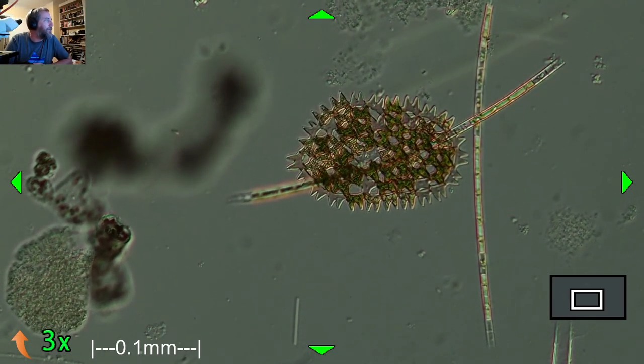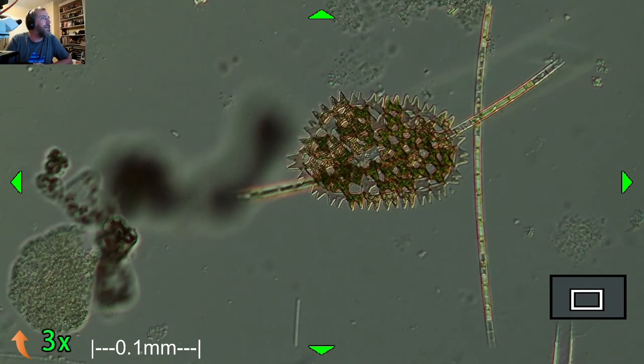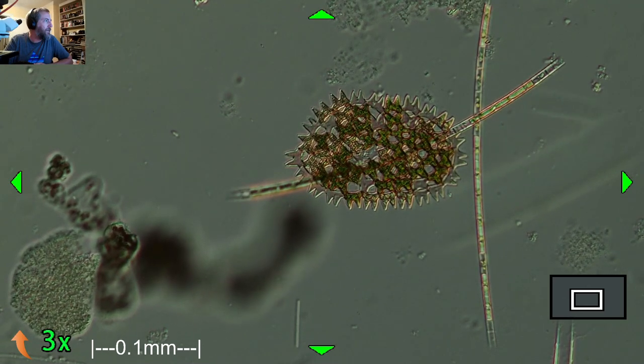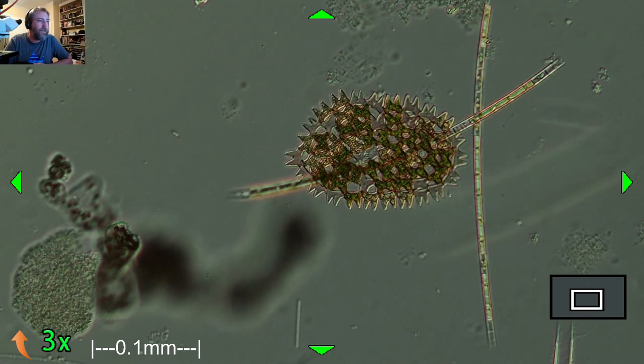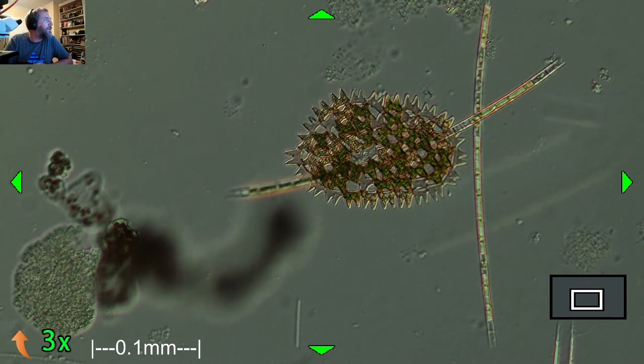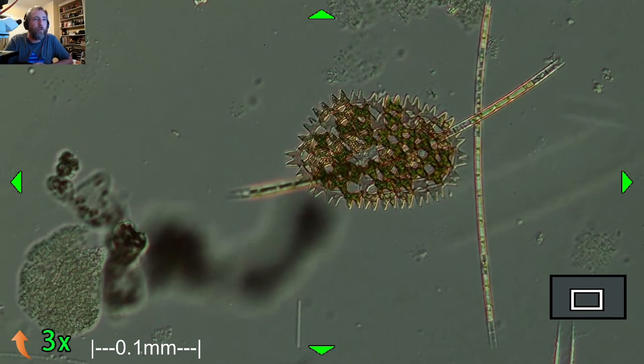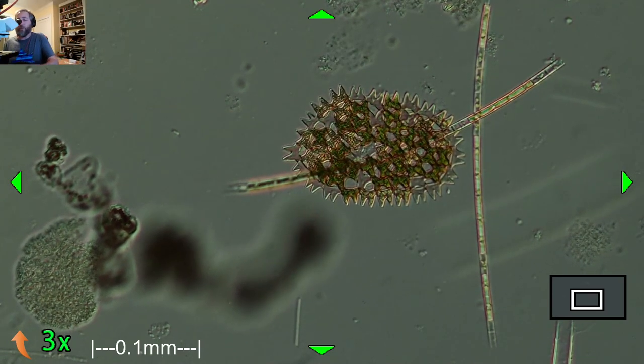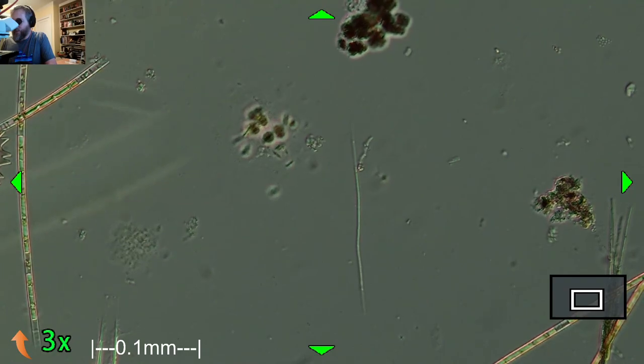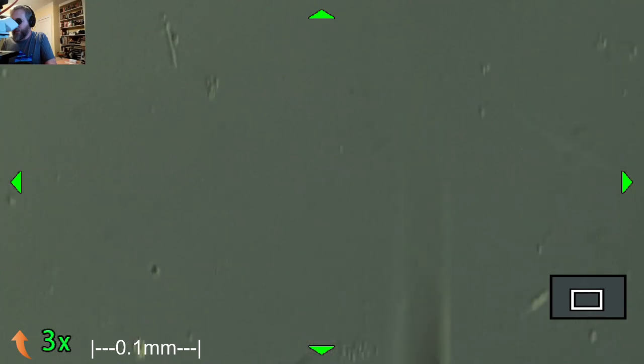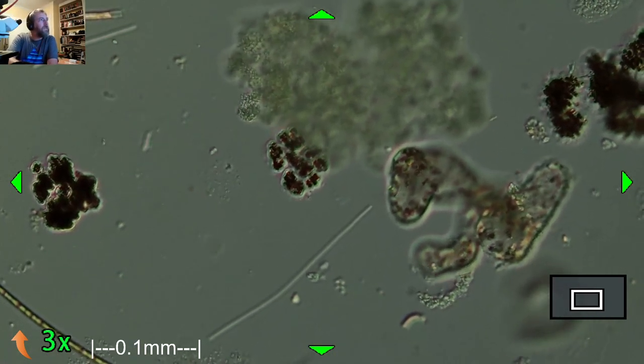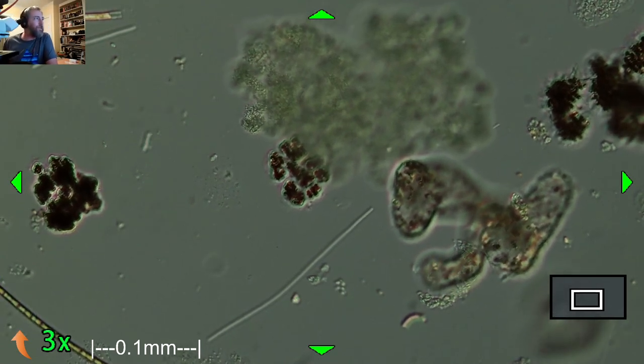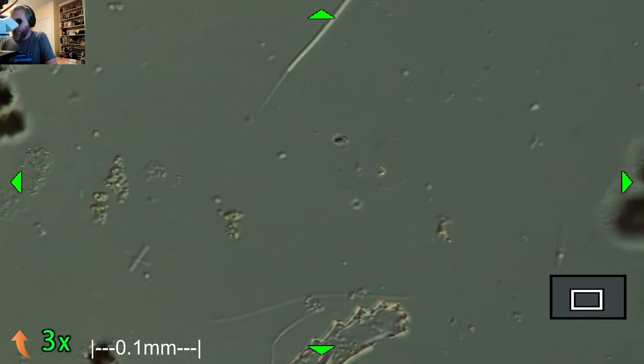Not sure why the music is jumping around in volume all of a sudden. It's super loud. There's a bunch of green algae in here. I think that's what this stuff that looks like it's in a sack here is. Yeah, Pediastrum is the ones that look like little kaleidoscopes.